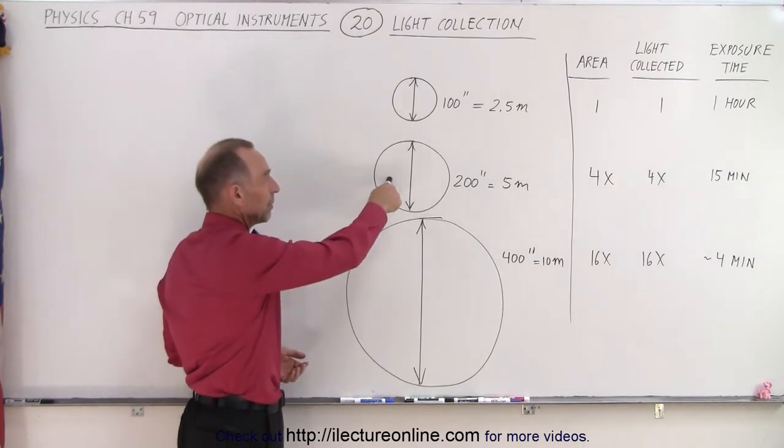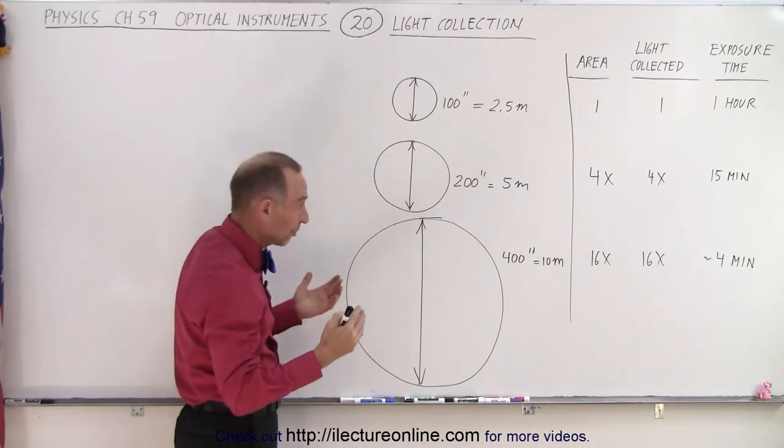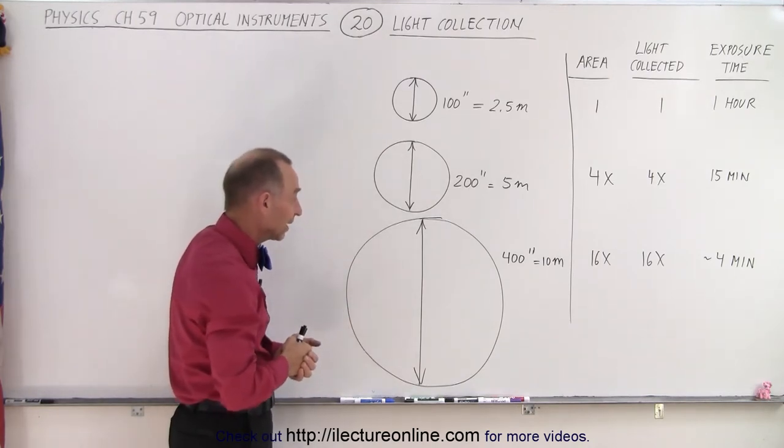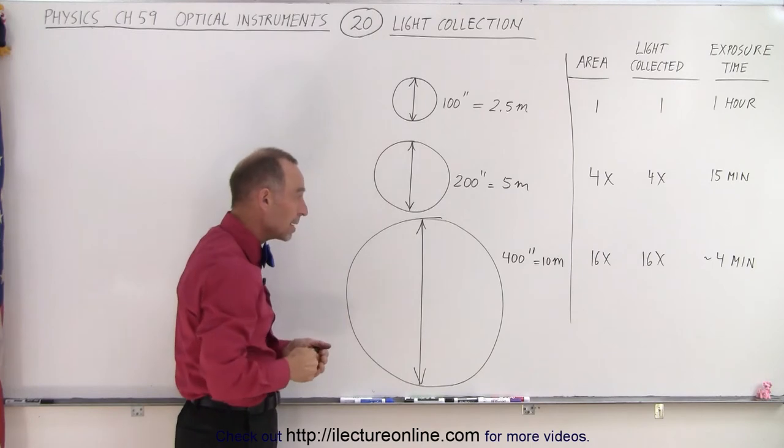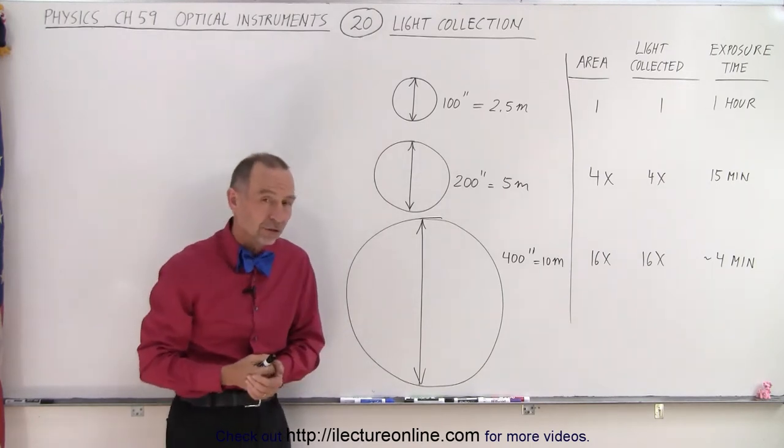The Mount Palomar telescope in the mountains off San Diego is 200 inches across, which is a five meter telescope. And finally, the Keck telescopes on Hawaii have a diameter of 10 meters, which is about 400 inches.